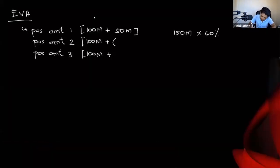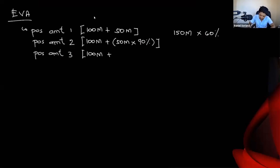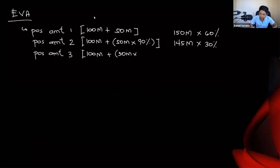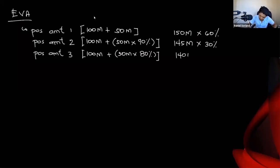Possible amount two: if completed one week late, the performance bonus decreases by 10%, leaving 90% of 50 million, which is 45 million. So the second possible amount is 145 million, with a 30% probability. Possible amount three: if completed two weeks late, two 10% deductions apply, leaving 80% of 50 million, which is 40 million, giving a third possible amount of 140 million, with a 10% probability.